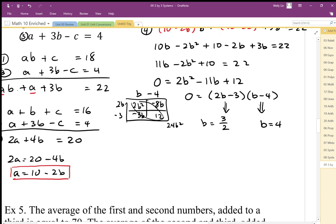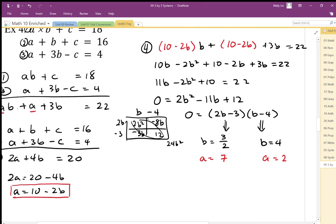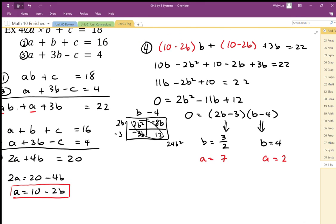Well, if I know that b is equal to 4, I just plug it back into the a, and I would end up with a is equal to, well, a is 10 minus 2b. Well, that's going to be a is equal to 2. In this case here, if b is 1.5, 10 minus 2 times 1.5 is going to be equal to 7. And then lastly, I could just go ahead and solve for the last variable c.